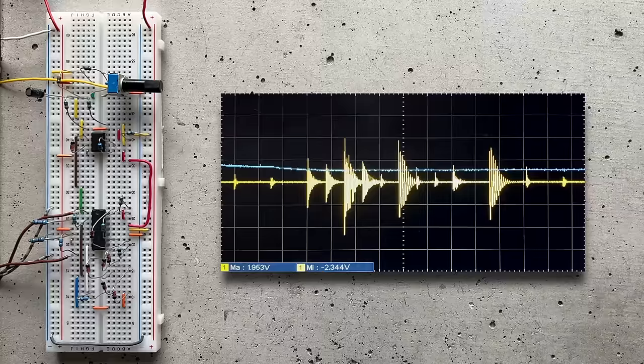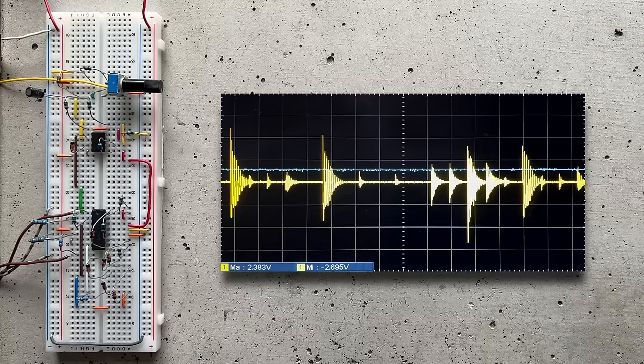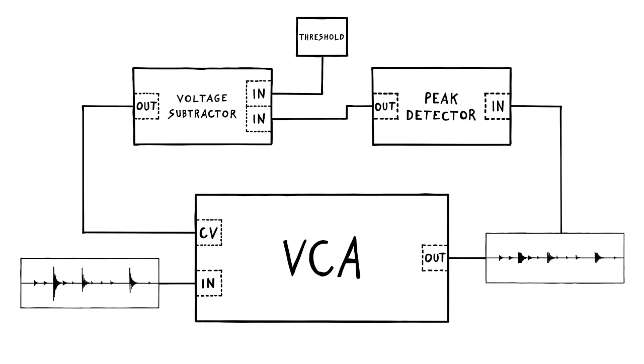The big peaks are actually reduced in volume. Though, weirdly, they're not capped at the threshold. Instead, there's a prominent gap between the threshold and the peaks. What's up with that? Well, this is, again, the diode's fault.